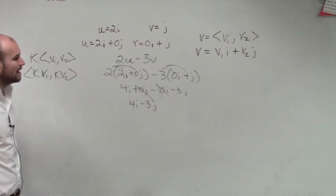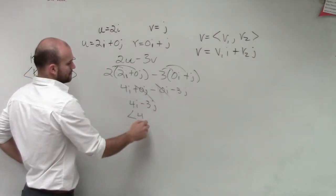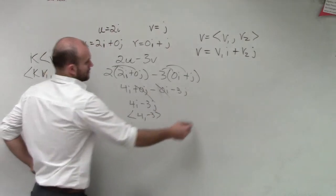So now we need to do 4i minus 3j, which again, you want to write in a component form. So let's go and graph it.